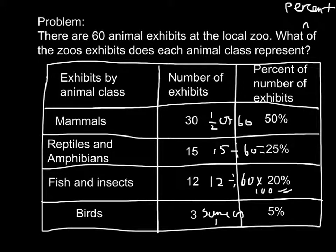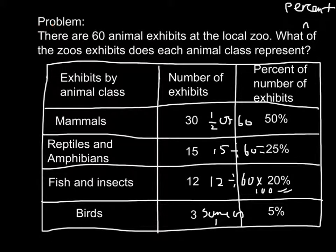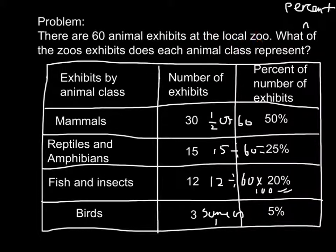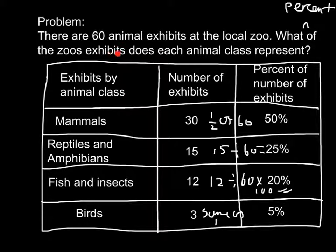Hey guys, this is Dylan and today I'm going to be showing you how to use percentages. The problem is: there are 60 animal exhibits at the local zoo. What percent of the zoo's exhibits does each animal class represent?